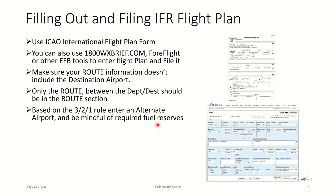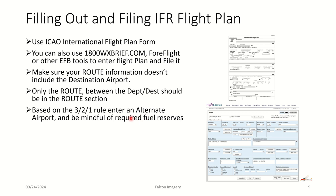You want to keep in mind that you may need to file an alternate airport. If you remember the 1-2-3 rule: three statute miles of visibility, 2,000-foot ceilings, plus or minus one hour from your expected time of arrival — if you don't have those types of ceilings and visibility, you're going to need to file an alternate. You've got to be mindful of the required fuel reserves. Make sure to include contact information so that you can be reached to check on your status and to close out your flight plan.